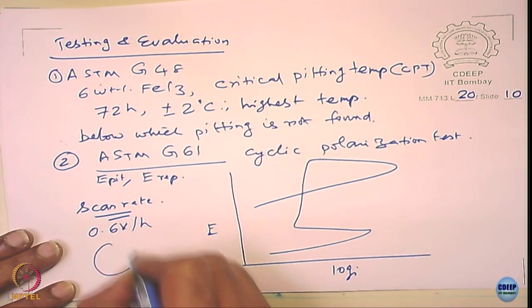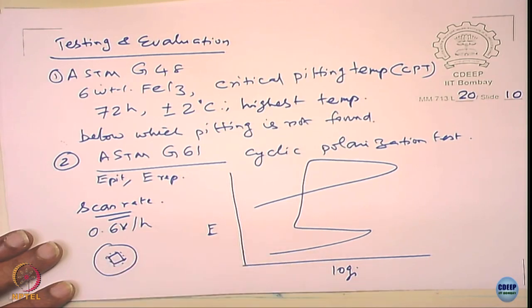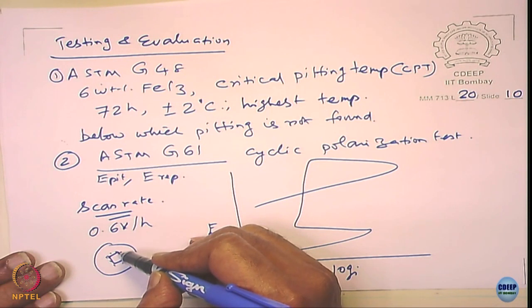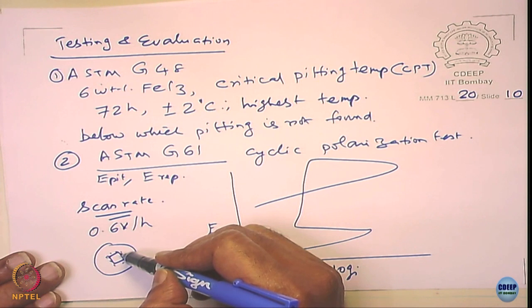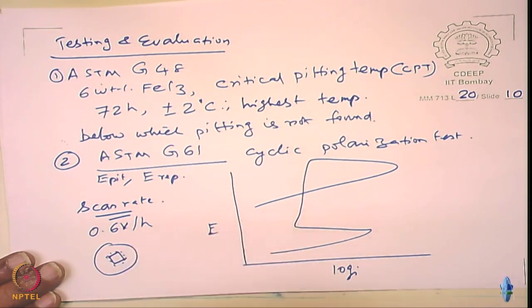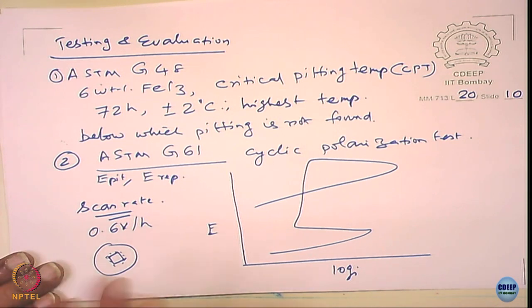ASTM G61 is cyclic polarization. Here you determine the E_repassivation potential. An important note: higher scan rate gives higher E_pit values, so you must maintain the scan rate as stated in the standard — 0.6 V per hour. A common problem is crevice attack at the interface between the sample and the mount: if crevice attack occurs, the E_pit will be lower than the actual value. In our lab, we apply a small bead of epoxy resin to protect that interface.